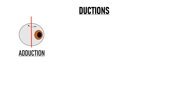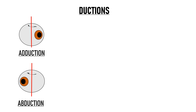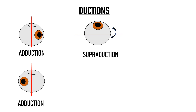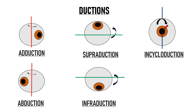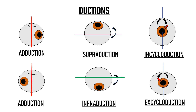So the six uniocular eye movements all share the suffix 'duction': adduction, abduction, supraduction, infraduction, in-cycloduction, and ex-cycloduction. To remember adduction versus abduction: to abduct literally means to kidnap, that is to take something away — so abduction is pulling the eye away from the midline. Torsional movement towards the nasal side is in-cycloduction, and towards the temporal side is ex-cycloduction.